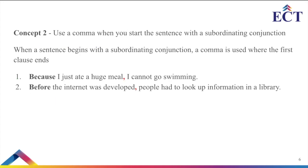The second concept is: use a comma when you start the sentence with a subordinating conjunction. When the sentence begins with a subordinating conjunction, a comma is used where the first clause ends. For example, 'Because I just ate a huge meal, I cannot go swimming.' Since you are starting with 'because,' which is a subordinating conjunction, you put a comma where the first clause ends. Whenever you begin a sentence with a subordinating conjunction, the sentence must have a comma — otherwise it will be grammatically incorrect.